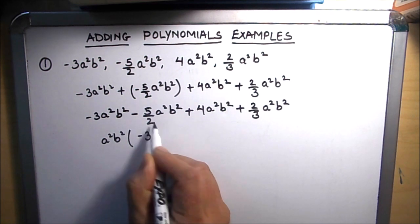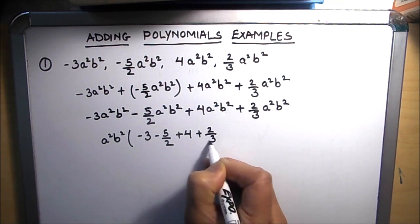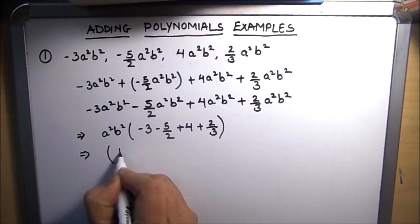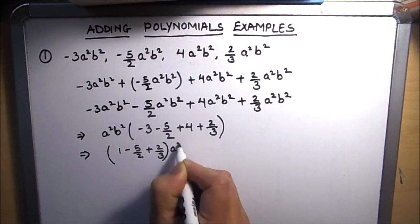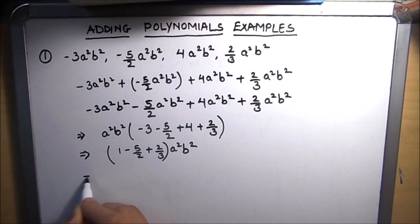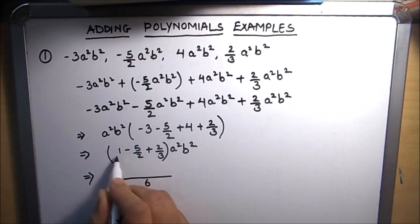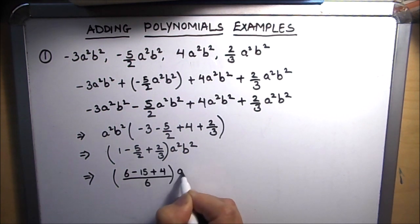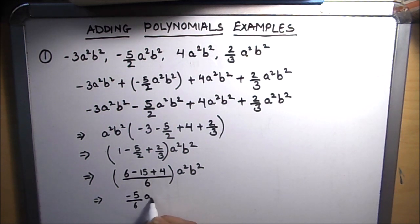So the coefficients are: minus 3, minus 5/2, plus 4, and plus 2/3. Writing the constants together, this becomes (1 minus 5/2 plus 2/3) a²b². Taking the LCM of 6, this becomes (6 minus 15 plus 4) / 6 a²b², which comes out to minus 5/6 a²b².